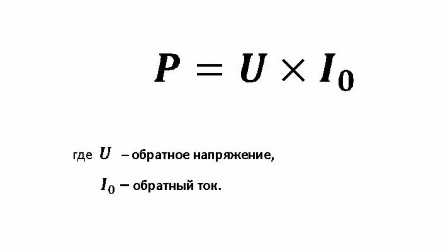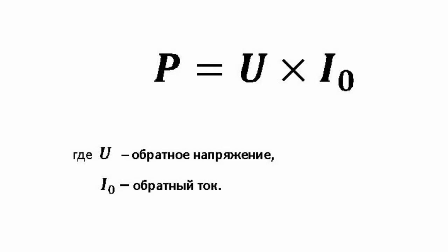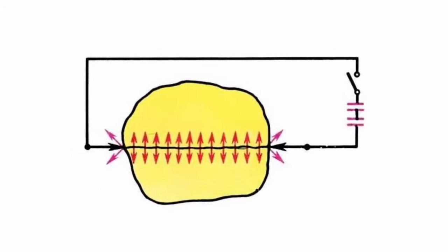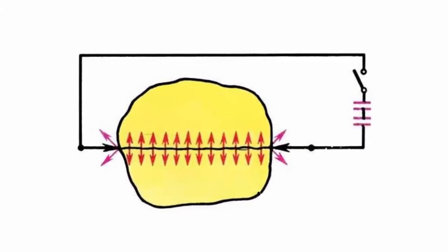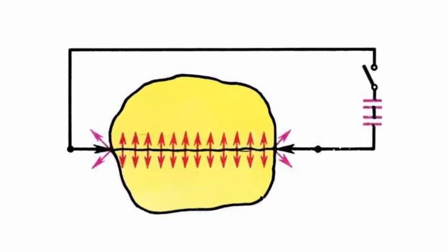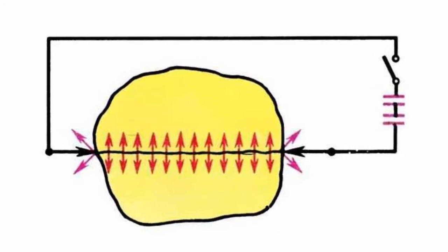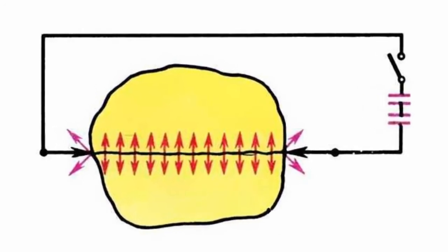This leads to an increase in the temperature of the junction and of the adjacent areas. In its turn, the increased temperature leads to an increase in the reverse current of the junction, and thus to that of the dissipated power.